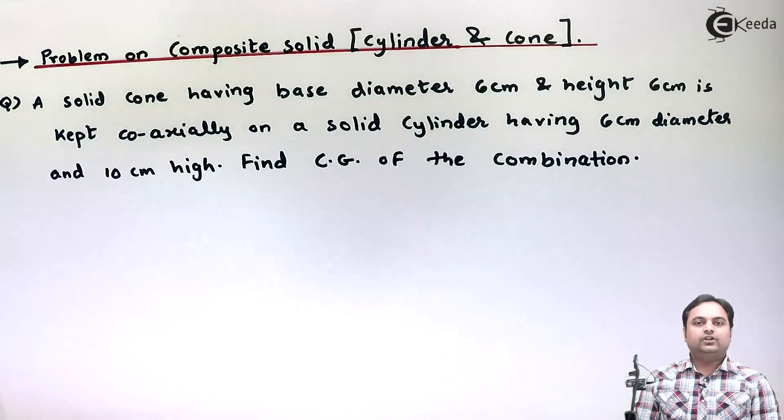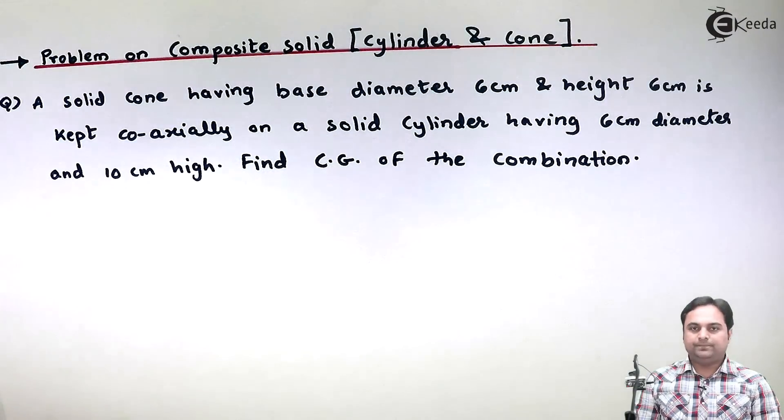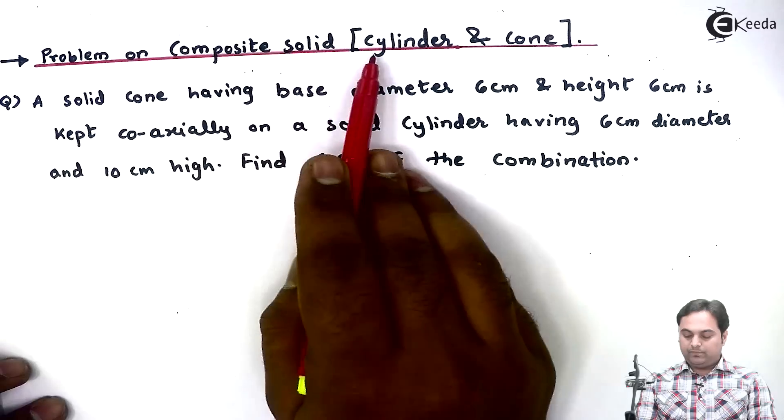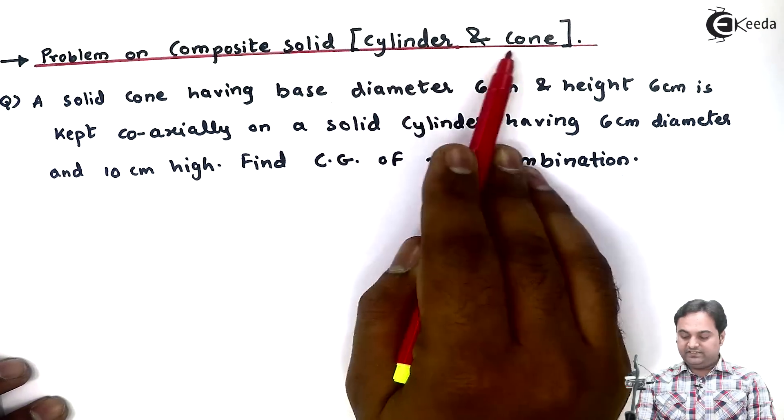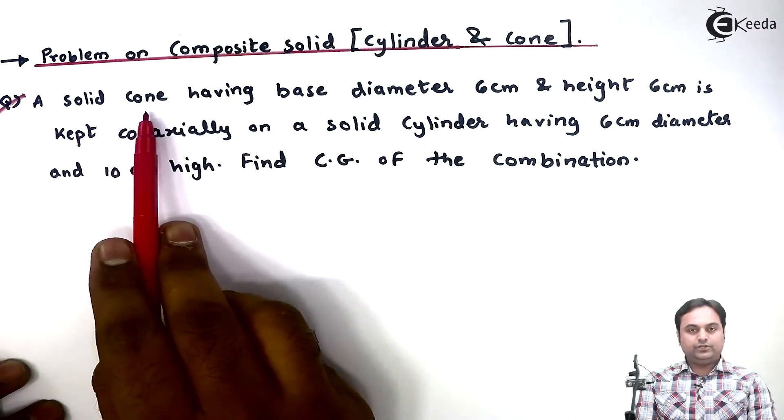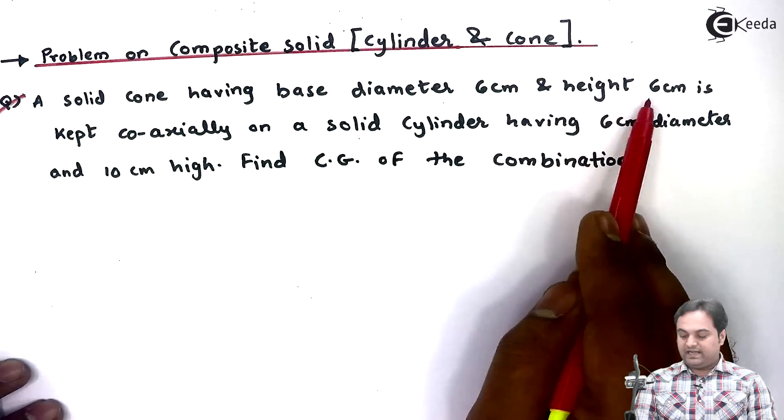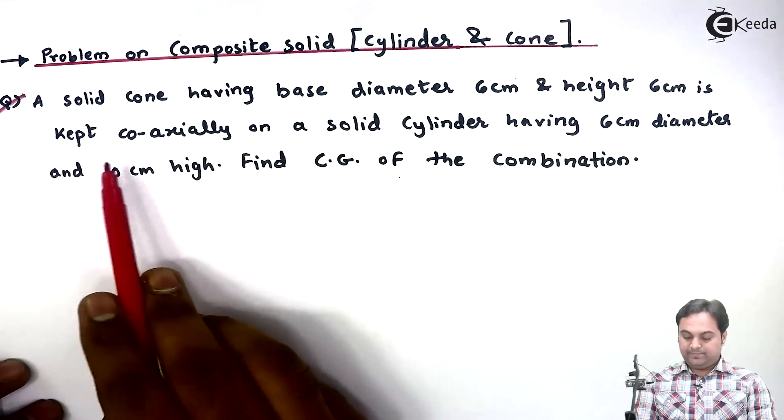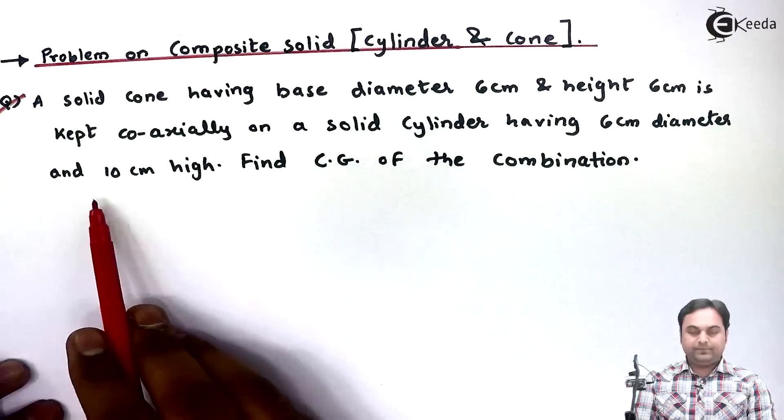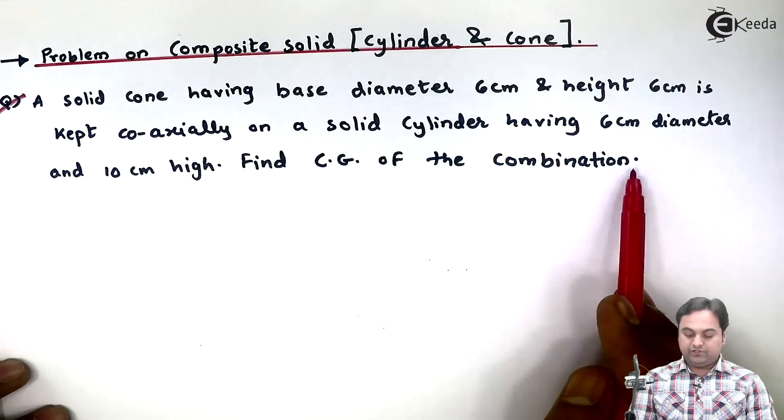In this video we will see how to find out the center of gravity for composite solid. So let's read the question here. We are having a problem on composite solid which is cylinder and cone. A solid cone having base diameter 6 centimeter and height 6 centimeter is kept coaxially on a solid cylinder having 6 centimeter diameter and 10 centimeter high. Find the CG of the combination.